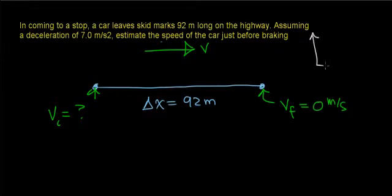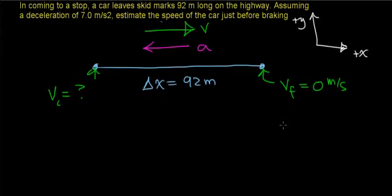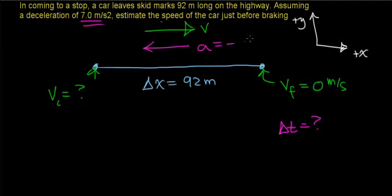If we draw a coordinate system, positive x is the direction of motion, and positive y is perpendicular. We're only looking at motion in the x direction. Over this 92 meters, the car is slowing down or decelerating, so the velocity and acceleration vectors point in opposite directions. The acceleration is given as negative 7 meters per second squared, indicating the object is slowing down.